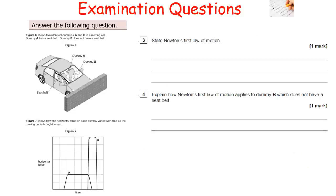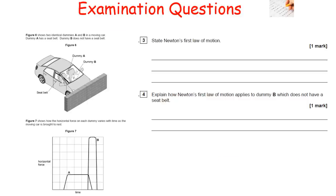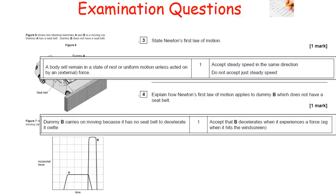Newton's first law states that a body will remain at rest or with constant velocity unless acted upon by a resultant force — an object will have inertia unless a resultant force acts on it. Applying this to dummy B: dummy B keeps moving because it has no seatbelt to provide a resultant force to change its velocity. Therefore B continues with inertia until it experiences a force when it hits the windscreen.